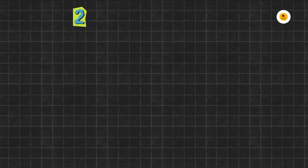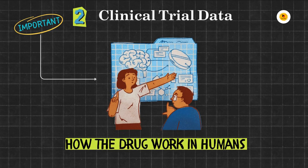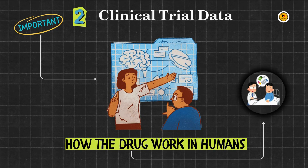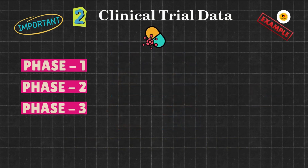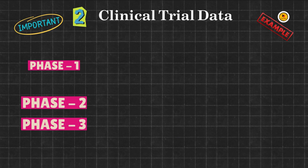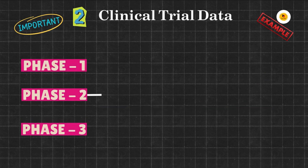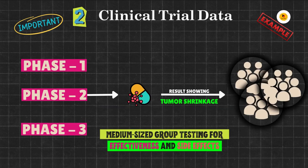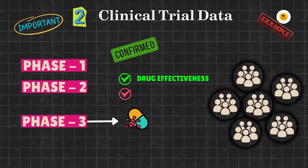The second important section of the New Drug Application is Clinical Trial Data. This is the most important section of the NDA because it shows how the drug works in humans during clinical trials. This section includes detailed data from all three phases of clinical trials. For a cancer drug, the company would include data from Phase I trials, which includes how the drug was tolerated by 50 patients, then data from Phase II trials, which includes results showing tumor shrinkage in 200 patients, followed by data from Phase III trials, which includes results from 1,000 patients confirming the drug's effectiveness and side effects.